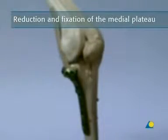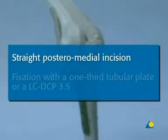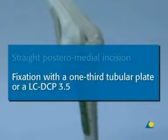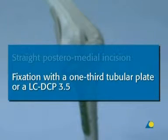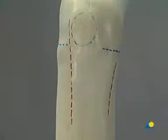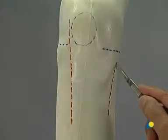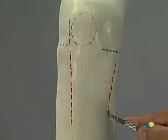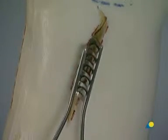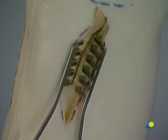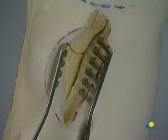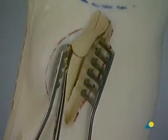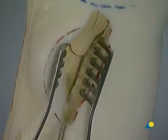Reduction and fixation of the medial plateau. First, a straight posteromedial incision, and second, fixation with a one-third tubular plate or an LCDCP 3.5. The medial incision is directly dorsal to the pes anserinus, which is elevated or partially incised depending on the fracture configuration. After clearing the fracture gap, reduction is achieved by pushing the medial bone block upwards.